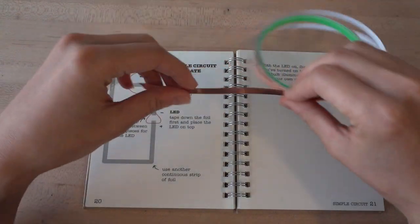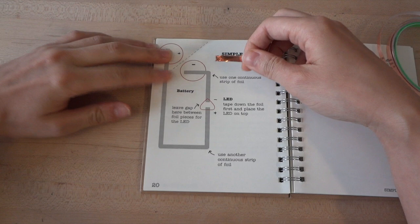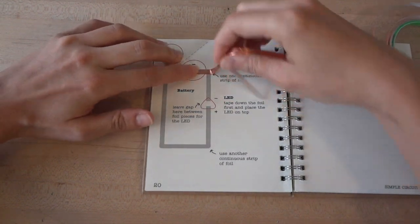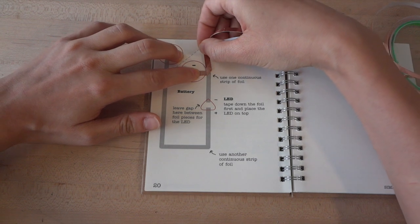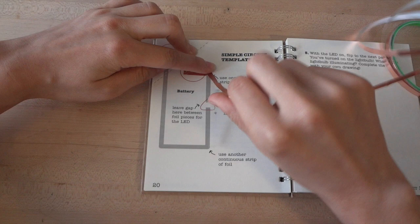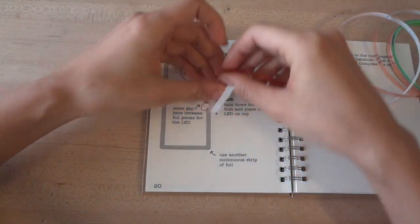First, stick conductive foil tape over the gray lines in the template. This will make the electrical connections in your circuit. To make your tape turn corners, fold your tape up away from the direction you want to go, so that the sticky side is up, and then fold it back down in the direction that you want to turn. This gives you a nice, clean, flat corner.